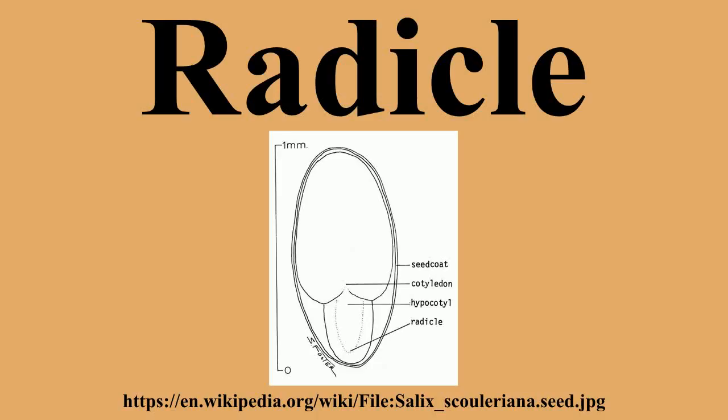In botany, the radicle is the first part of a seedling to emerge from the seed during the process of germination. The radicle is the embryonic root of the plant, and grows downward in the soil.